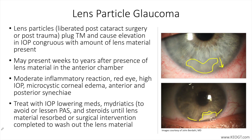Phacolytic glaucoma, a form of secondary open-angle glaucoma related to leakage of high molecular weight proteins through microscopic openings in the capsule of a hypermature cataract, also results in elevated intraocular pressure but can easily be distinguished with history — lack of cataract surgery or trauma — and physical exam showing presence of a mature or hypermature cataract. Sending aqueous humor taps for analysis to identify polymorphonuclear cells could be done if there is confusion between lens particle glaucoma and phacoantigenic glaucoma, although the differences are academic since the treatment is essentially the same.